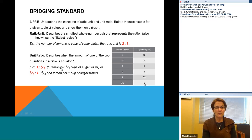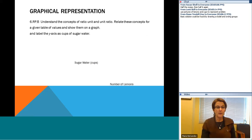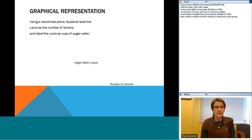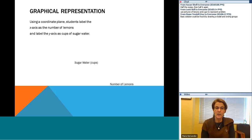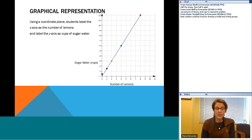These will be important because if we can get back to that unit ratio, we can solve lots of problems. It will also come into play when we talk about slope and unit rate. If I decide to graph these on a coordinate plane — nobody suggested graphing — with the number of lemons along the horizontal axis and cups of sugar water on the vertical axis, I can plot some of those points from the table. Here I have two lemons to three cups of sugar water, four to six, and the original recipe of eight lemons to 12 cups.